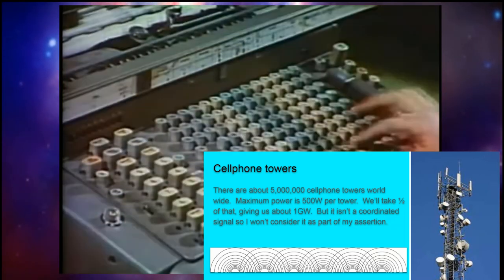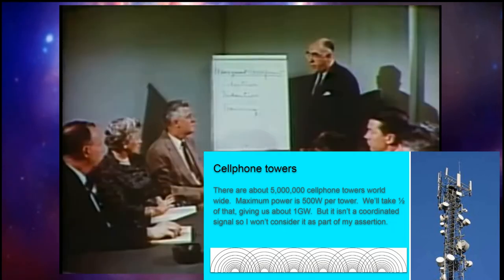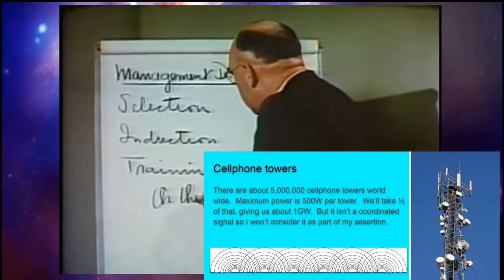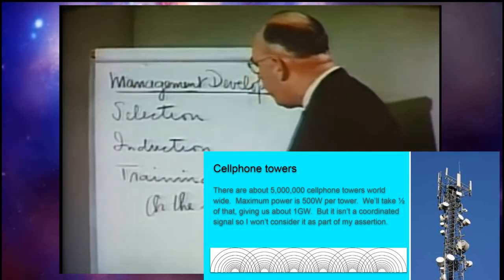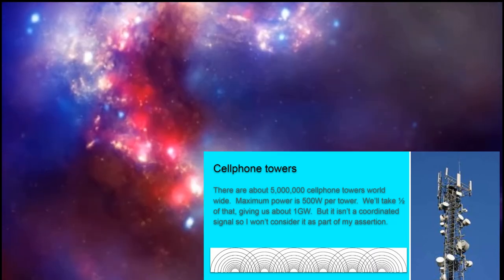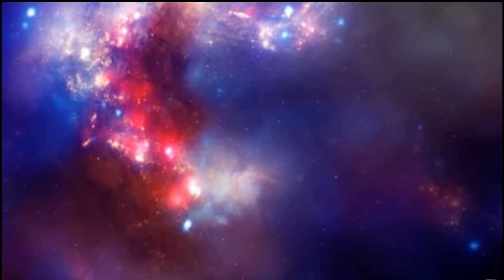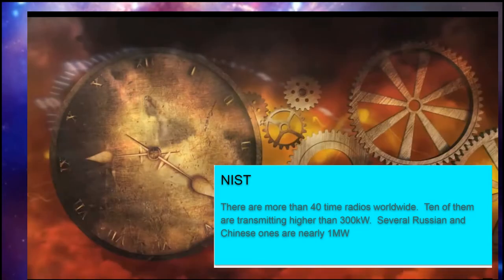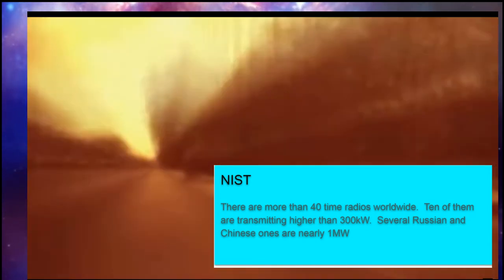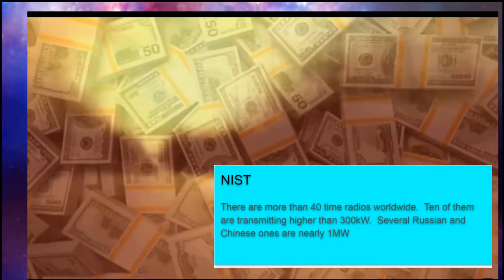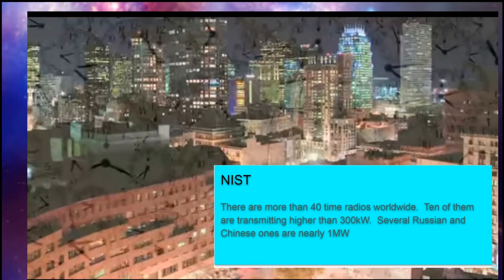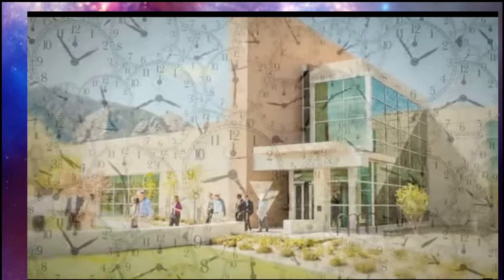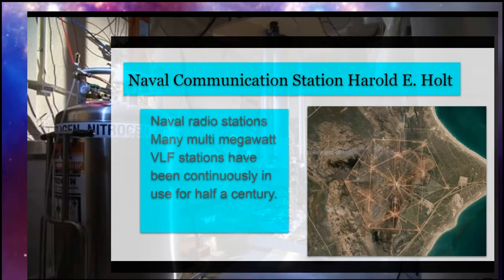Cell phone towers, I'll toss in, but I don't expect them to be much. There are about 5 million cell phone towers worldwide. The maximum power is 500 watts per transmitter. So if we take half of that, it gives us about a gigawatt of transmission power, but it's not a coordinated signal. They'll be radiating over top of each other. There'll be constructive and destructive interference. It's not worth tossing them in. I got more than enough evidence otherwise. Governments, more than 40 time radio stations worldwide are maintained by them. 10 of them are transmitting at higher than 300 kilowatts, and several Russian and Chinese time bases are nearly 1 megawatt. And these are clockwork precision radio transmissions. And they've been going on for a very long time.